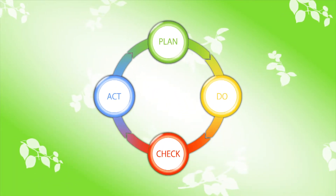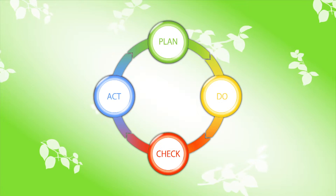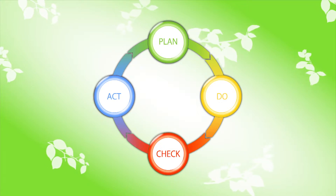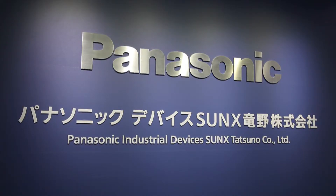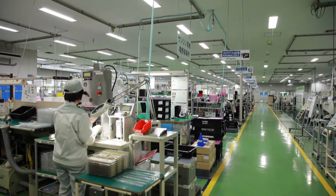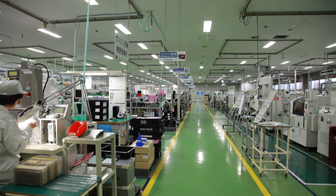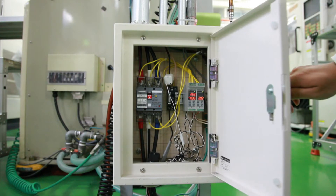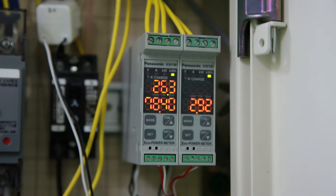Implementing the PDCA cycle will benefit your company on its productivity and profit. We want to introduce a model company who is practicing the PDCA cycle: Panasonic Device Sanks Tatsuno Corporation Limited. They have many eco power meters installed in their factory, and the whole company is working on saving energy.